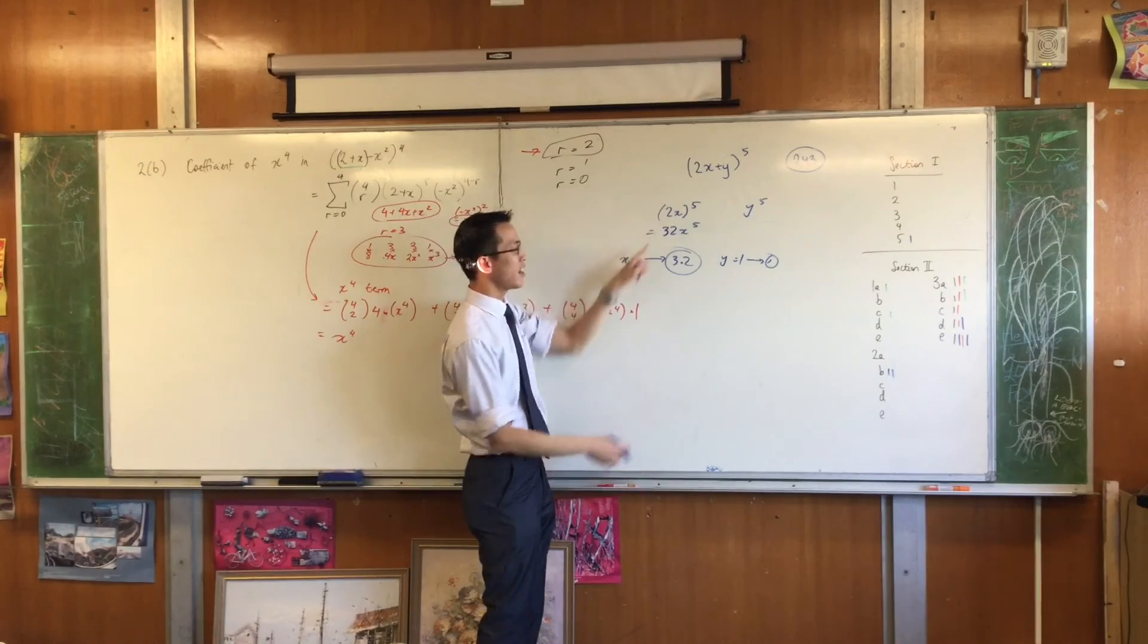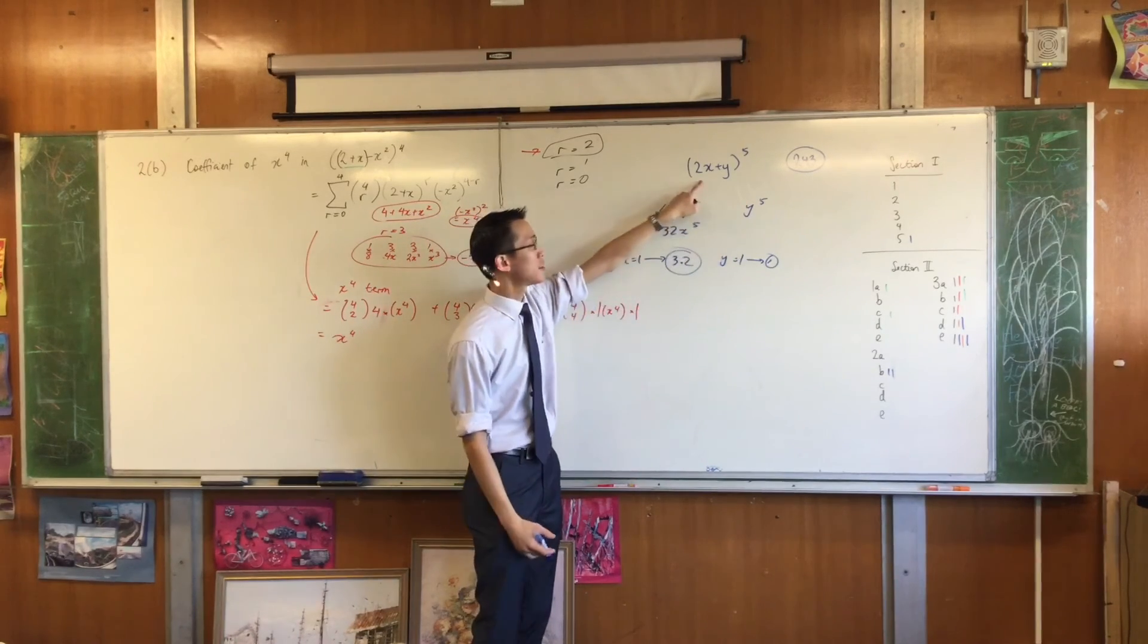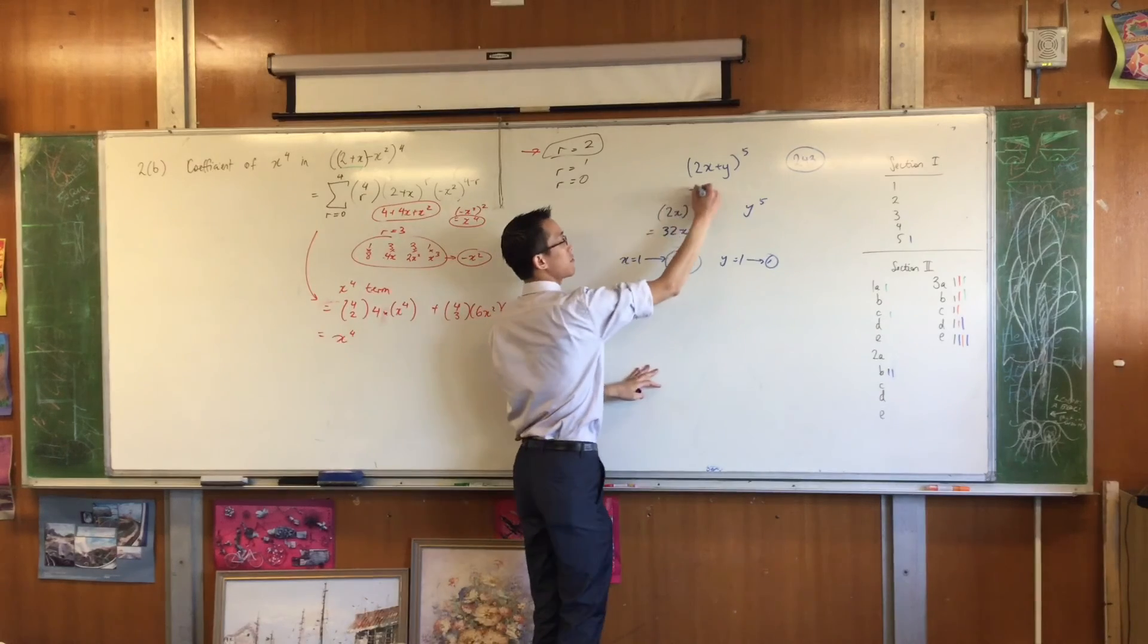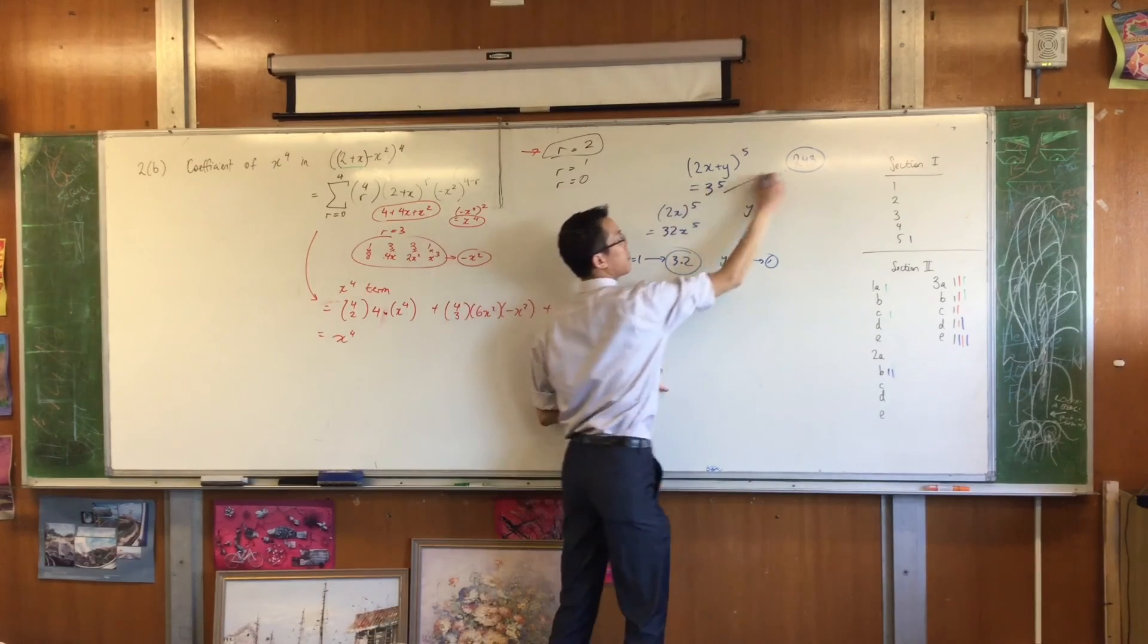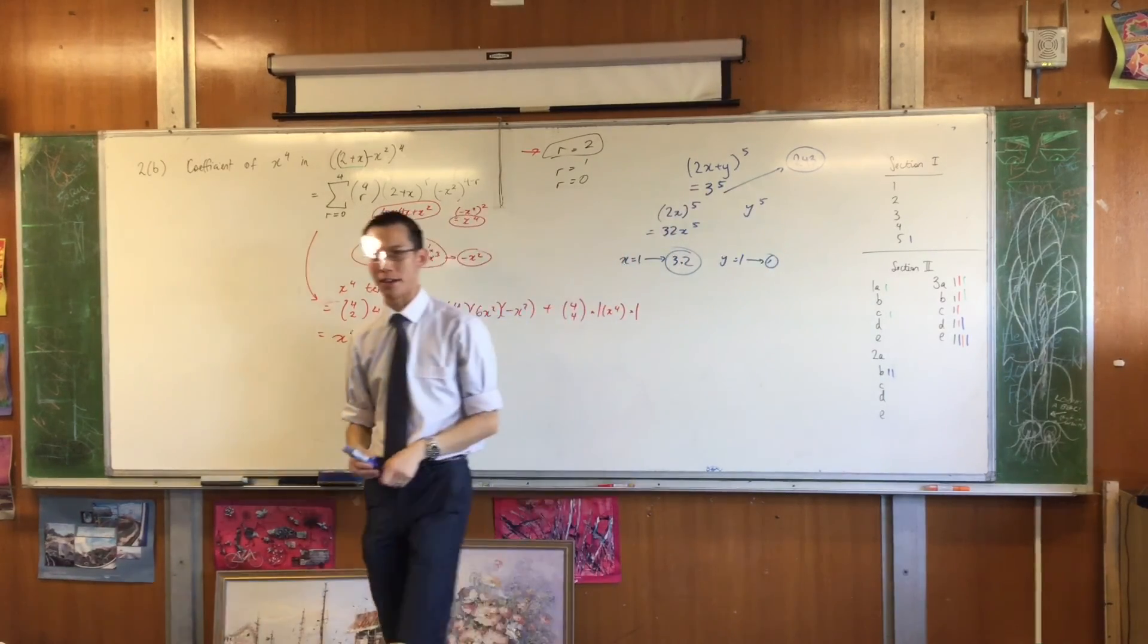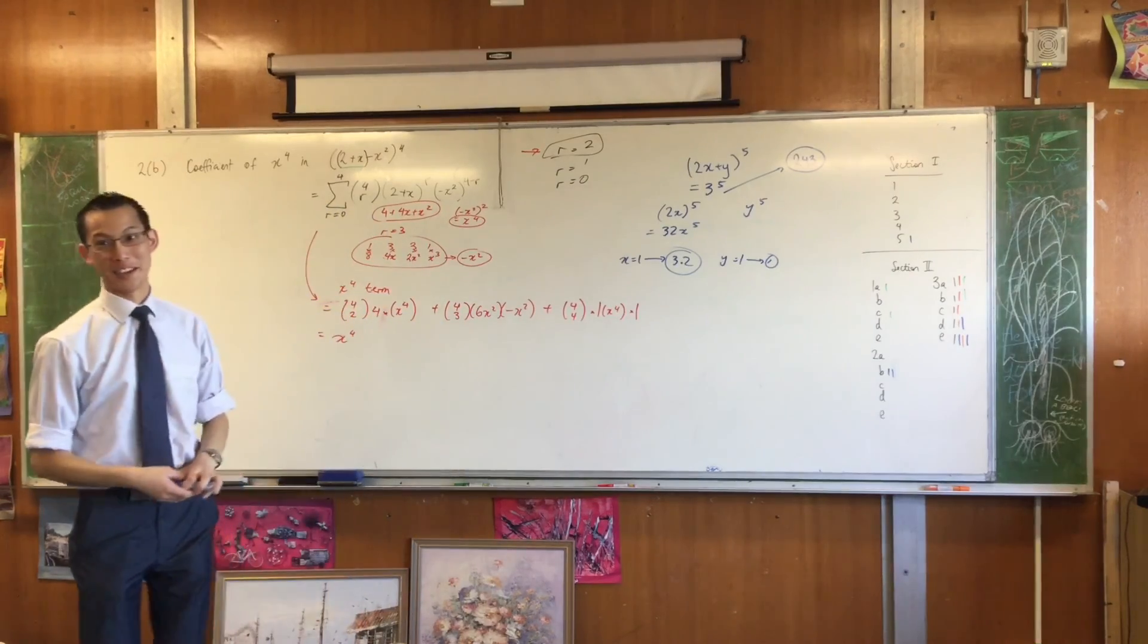So in fact, a nice, completely unrelated—semi-unrelated—way of doing this is just say x and y, let them be 1. What happens to this thing? Which is 243. That's a sweet way to get the marks.